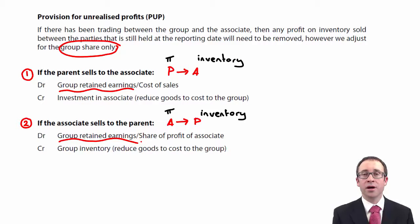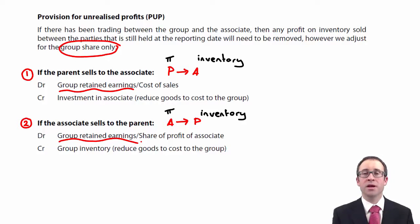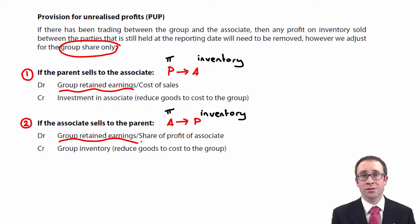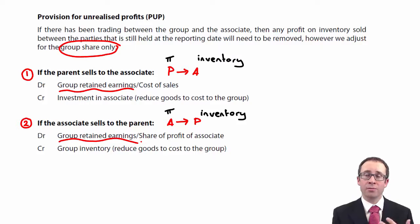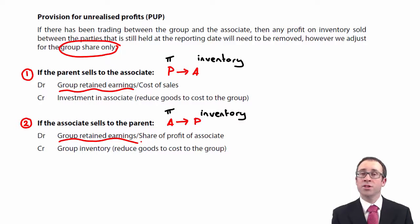In the second scenario, A sold to P: P has the inventory, so we can credit the inventory on the inventory line in the group accounts. The debit in the SFP always goes to group retained earnings as it is the group that has the influence. As the associate has made the profit, we remove that PUP adjustment from the share of profit of associates. It's worthwhile committing those journal entries to memory so you can apply them in the exam, and when you calculate the PUP adjustment based upon goods in inventory at the end of the year and the markup or margin, don't forget to take the group share.